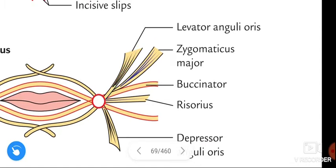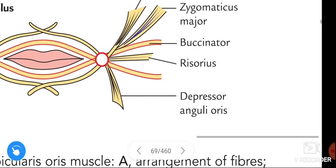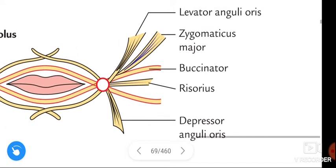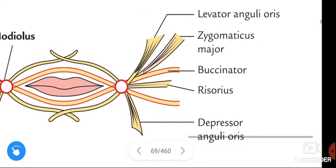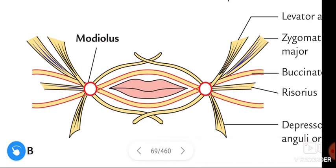To recap: levator anguli oris, zygomaticus major, buccinator, risorius, and depressor anguli oris — these are the five muscles involved in the formation of the modiolus, which is present 1.25 cm lateral to the angle of the mouth.